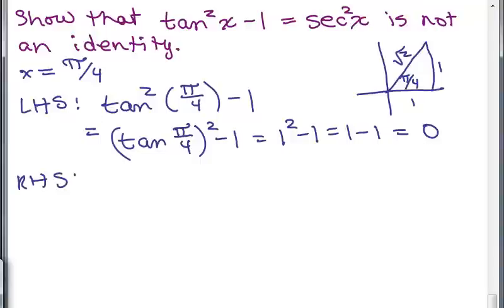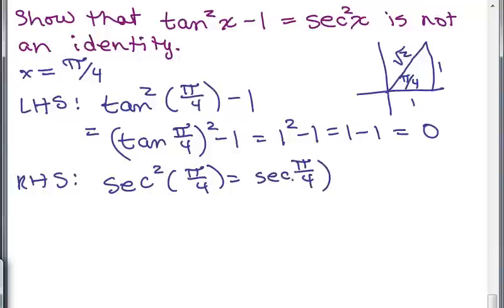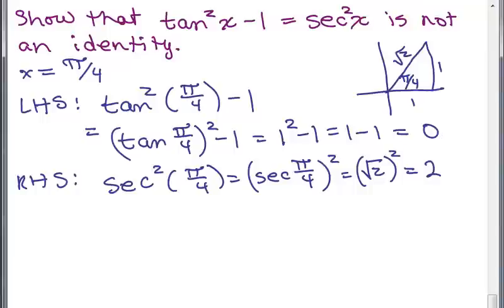For the right-hand side: sec²(π/4). The secant of π/4 is R over X, which is √2 over 1, so √2. And √2 squared is 2. So plugging in π/4 also shows that the left-hand side and the right-hand side give different numbers — 0 versus 2. There are infinitely many possibilities for X, but you only have to show it for one value to prove that it's not an identity.